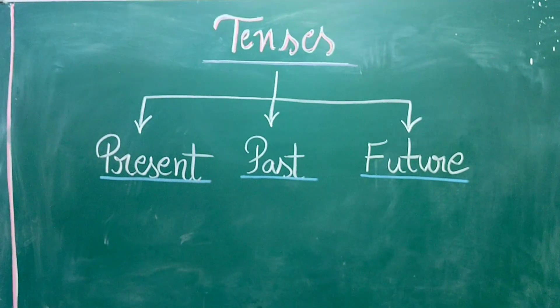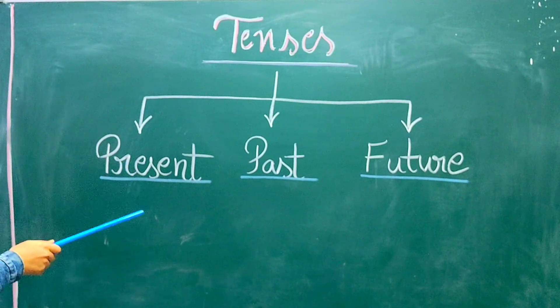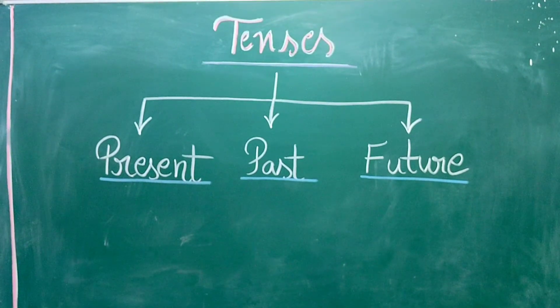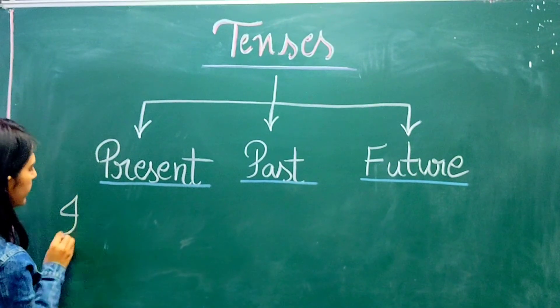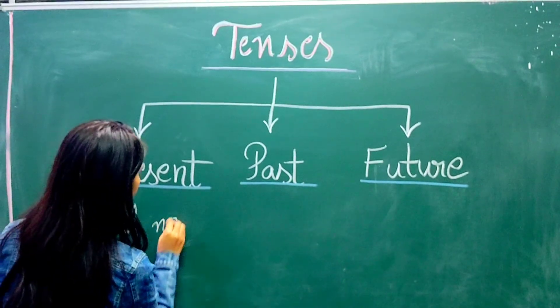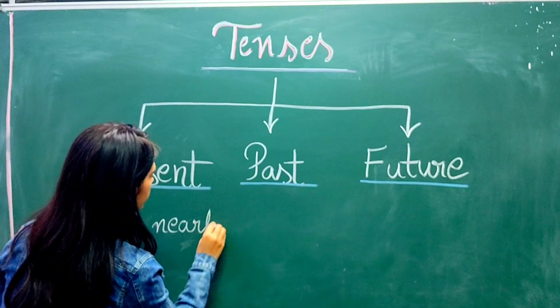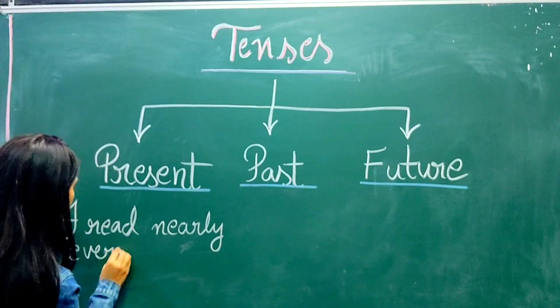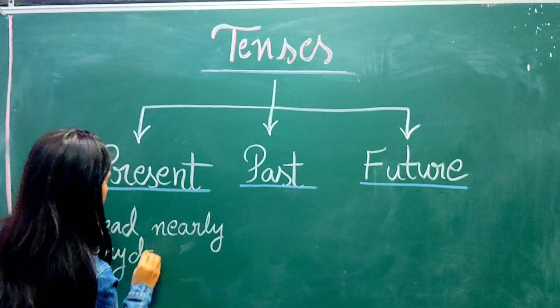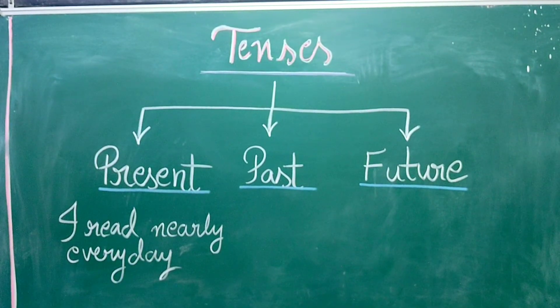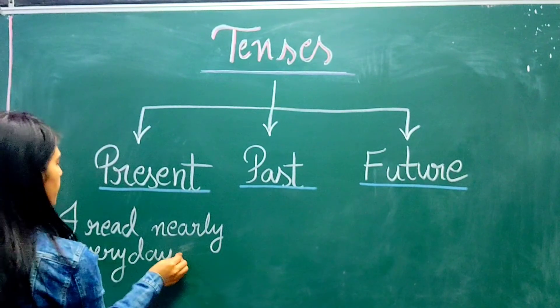So children, the present tense is used to describe things that are happening right now. For example, I read nearly every day. I read nearly every day. So this is our present tense.